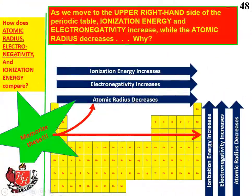As a summary of the three properties: as we move to the upper right-hand side of the periodic table, ionization energy and electronegativity increase while atomic radius decreases. Be sure you can explain why these things happen — it basically comes down to number of orbitals and number of protons in the nucleus.